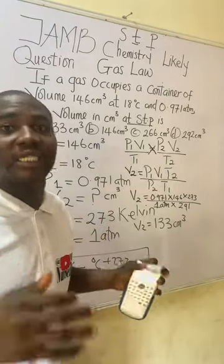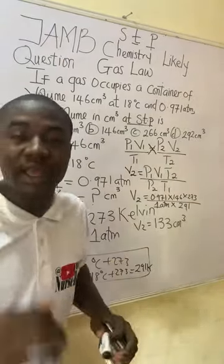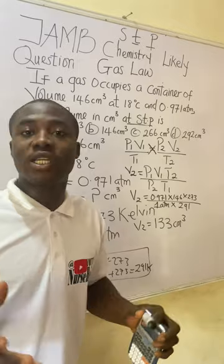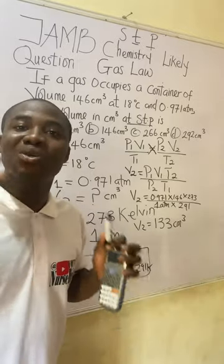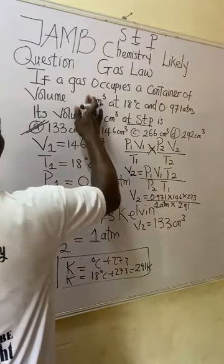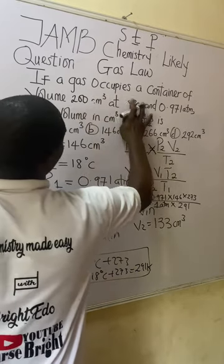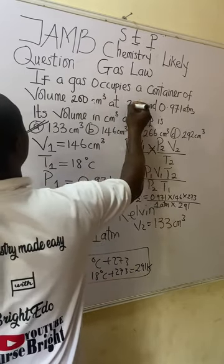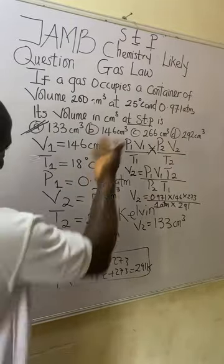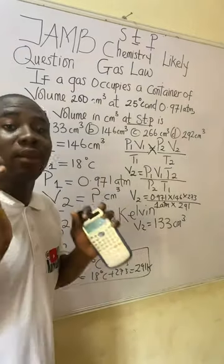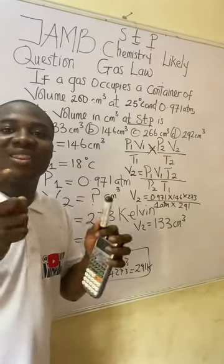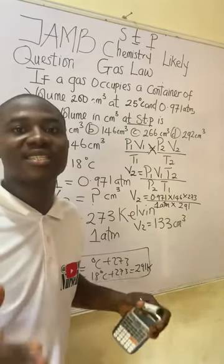I hope you understand everything covered here. For your practice question, change the volume to 200 cm³, the temperature to 25 degrees Celsius, keep the pressure the same, and find the volume at STP. Make sure to use the standard values for temperature and pressure, and put your answer in the comment section.